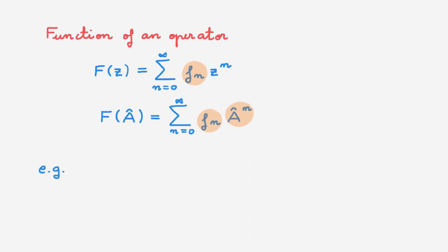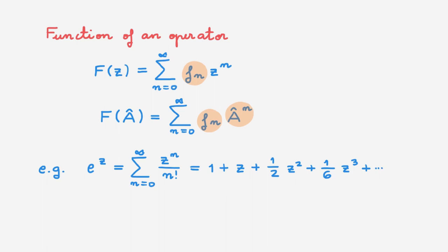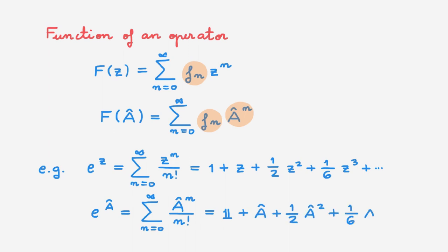We can write out the first few terms explicitly. The exponential of an operator A is given by the corresponding power series with the same expansion coefficients, and we can also write out the first few terms explicitly. In the rest of the video we'll explore some general properties of this definition. We'll find that some things work as you would expect for functions of scalar variables, but some things work differently, and it's important to be aware of potential pitfalls.